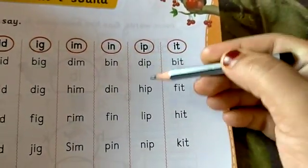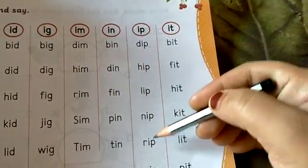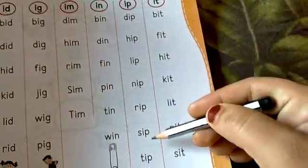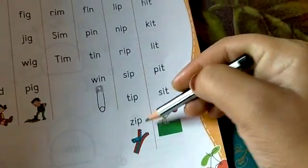D I p, dip. H I p, hip. L I p, lip. N I p, nip. R I p, rip. S I p, sip. T I p, tip. Z I p, zip.